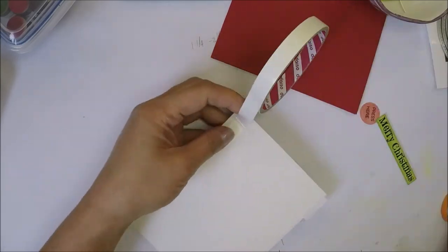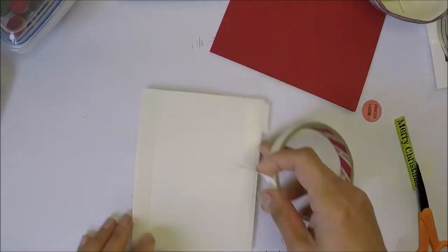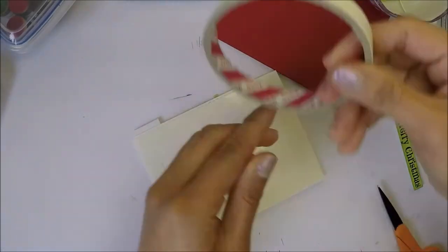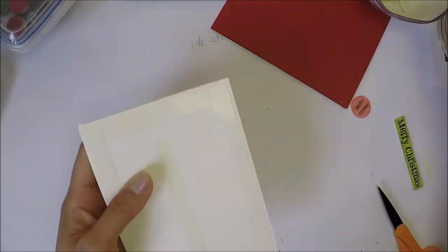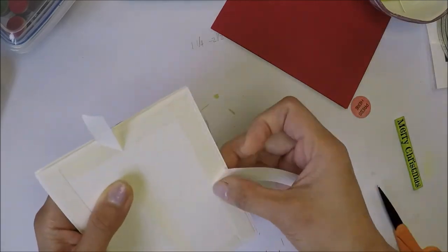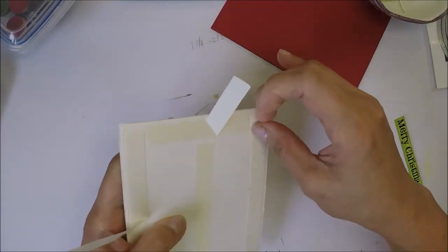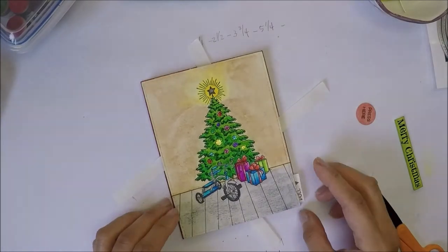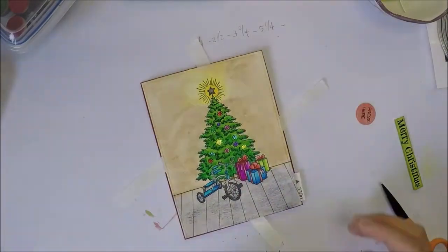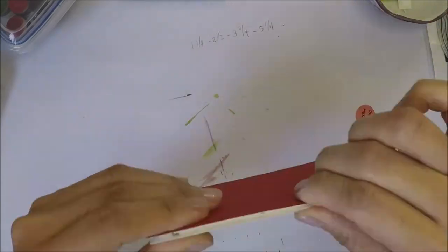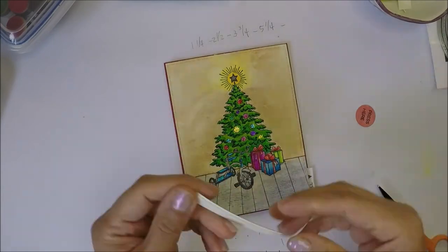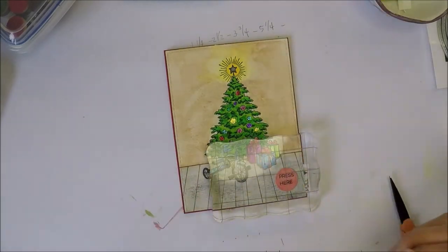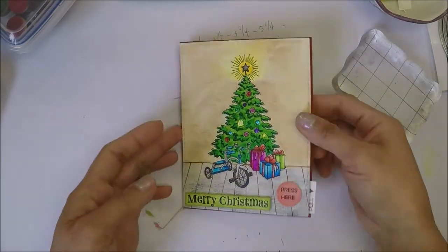Now that everything is ready, I'm going to add a strong double-sided tape on the back of this panel. And then we'll go ahead and adhere this on our A2 size top folding card base. And my card base is Papertrey Ink Pure Poppy cardstock. And then we'll adhere our sentiment on the lower part of the card and the stitch circle on the right side using Glossy Accents.